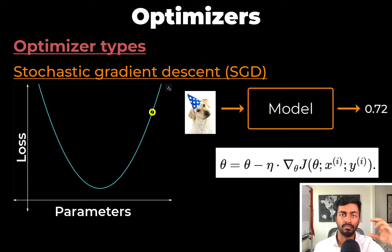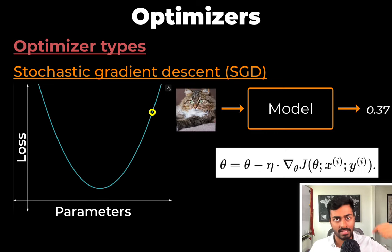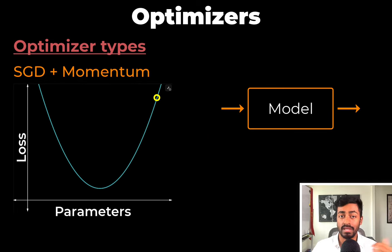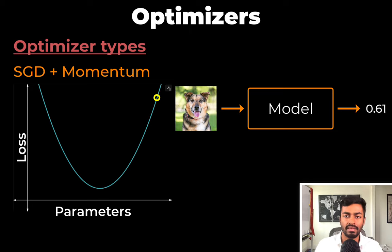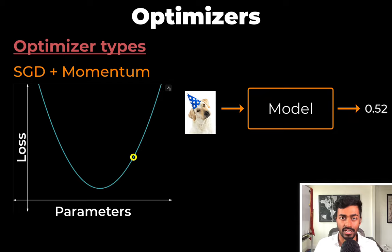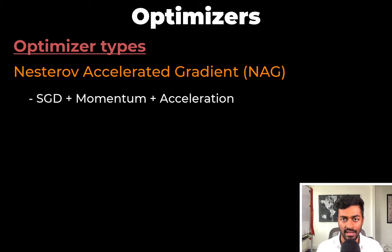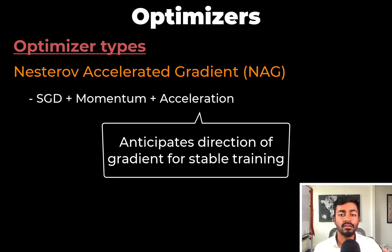For every single input-label pair we update the parameters step by step. The concept of momentum helps speed up learning by making larger learning jumps for common examples and smaller learning jumps for outlier examples. The Nesterov Accelerated Gradient, or NAG, method is the equivalent of stochastic gradient descent plus momentum plus a concept called acceleration. Acceleration ensures that the algorithm better anticipates the direction of the gradient for stable training.